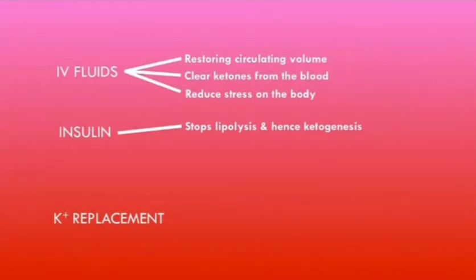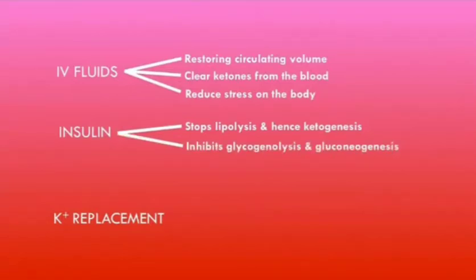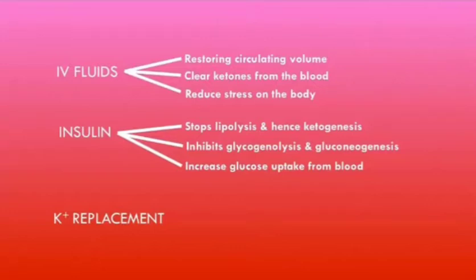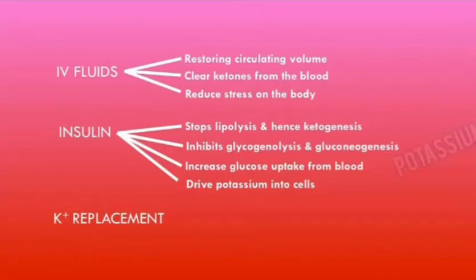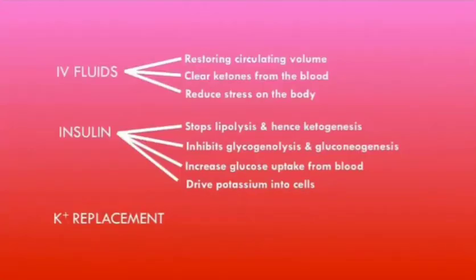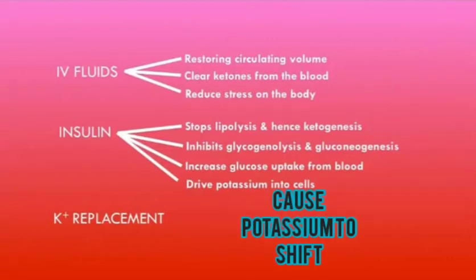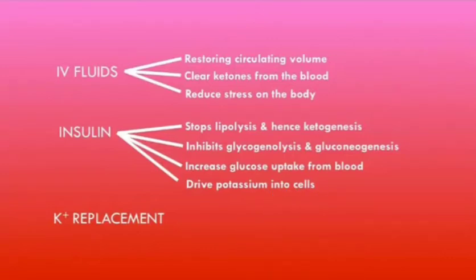Insulin can also go to the liver and inhibit glycogenolysis and gluconeogenesis, stopping further glucose production. Insulin will also increase glucose uptake from the blood into peripheral tissues, helping to correct hyperglycemia by lowering serum glucose levels. Another reason insulin is useful is that it drives potassium into the cells by stimulating the sodium-potassium ATPase pumps, causing potassium to shift from the blood into the cells, helping restore intracellular potassium levels.